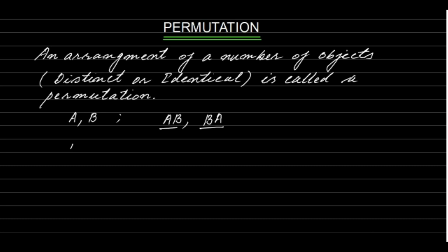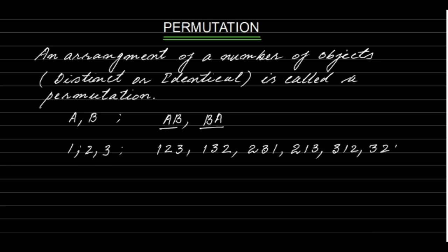Further, with digits 1, 2 and 3, if we arrange them in different orders we get: 123, 132, 231, 213, 312, 321. These six arrangements are the different permutations of these three digits. Each one of these arrangements is called a permutation.